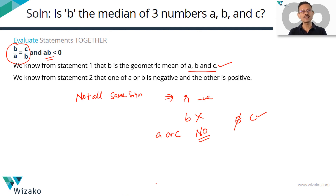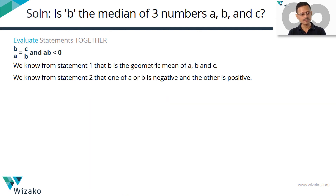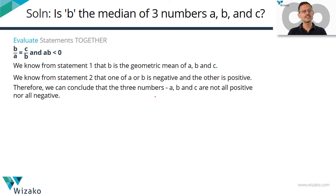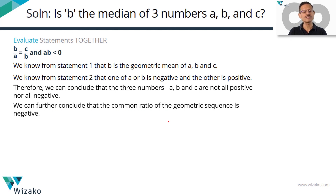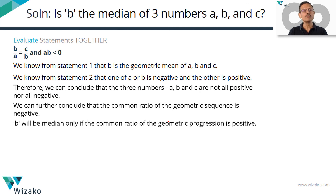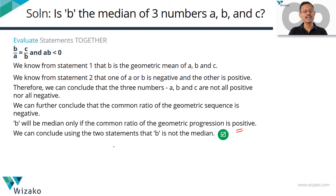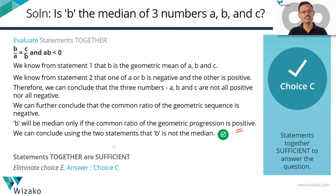We can conclude that A, B, C are not all positive nor all negative, which means the common ratio is negative for this geometric sequence. With B as the geometric mean and the common ratio negative, B cannot be the median. B would be the median only if the common ratio were positive. Together the statements are sufficient — we have a definite answer. Eliminate choice E; choice C is the correct answer.